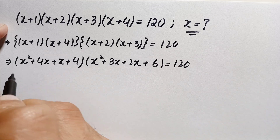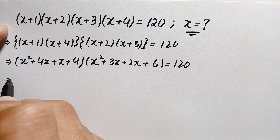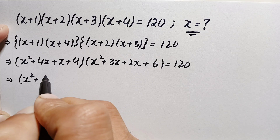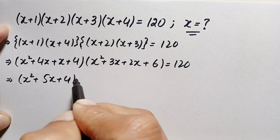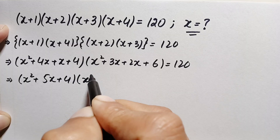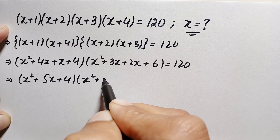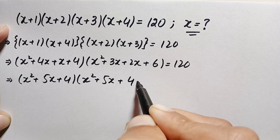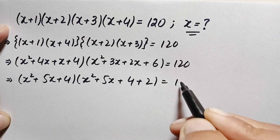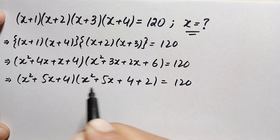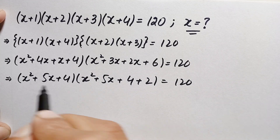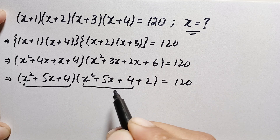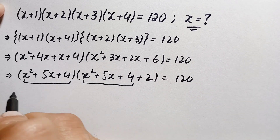Simplifying the left-hand side, we have (x²+5x+4)(x²+5x+6) = 120. Notice that x²+5x+4 is common in both expressions, so we will make a substitution.